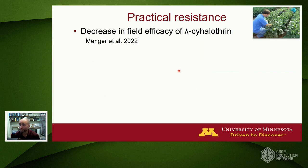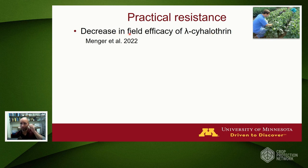That laboratory work using glass vial bioassays is very important, but it doesn't tell us how well or poorly these insecticides are working in the field. That's what we call practical resistance—the decrease in field efficacy of insecticide applications. What we did for this work is rely on our standard insecticide efficacy trials that extension entomologists like me and others in other states perform every year, evaluating new insecticides versus standard insecticides.